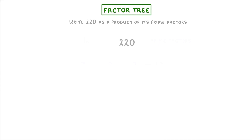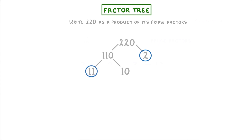Then we can start to factorise it by splitting it up into a factor pair. For example, we might do 110 and 2. If one of these is a prime number, and hence a prime factor, like 2 is, then we can circle it and leave it alone for now. But if it's not a prime number, like 110, then we have to factorise it again into, say, 11 and 10. 11 is a prime number, so we circle that, and then split the 10 into 5 and 2, which are also both prime numbers, so we can circle them both.